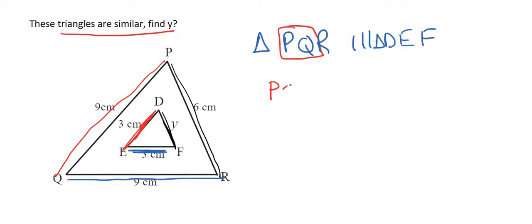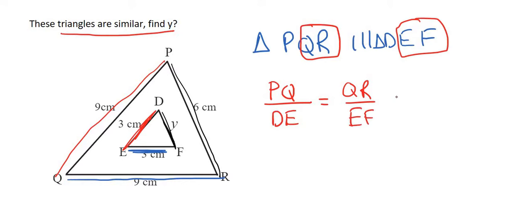that this one, PQ, over this one would always equal a certain number and that number would have to be the same as for example this one over this one, and that number, whatever it is would have to be the same as these two over these two, so PR over DF.